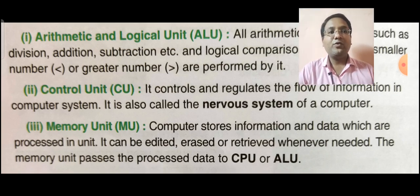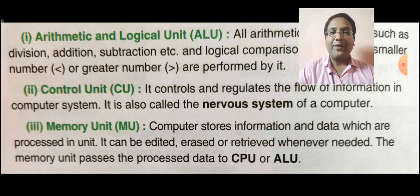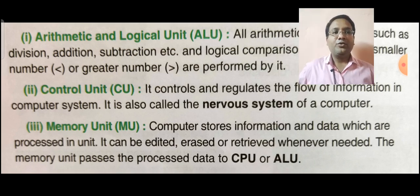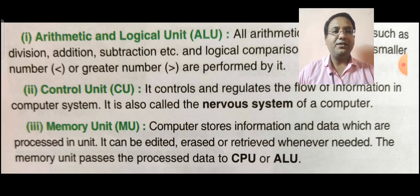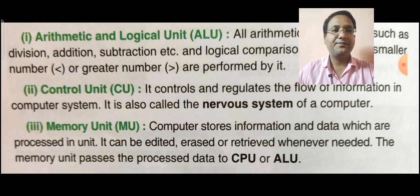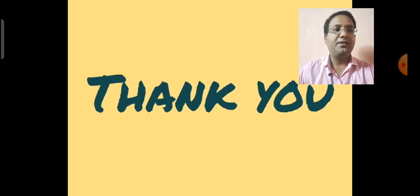There are two types of memory available in the computer. First is primary memory. Second is secondary memory. Today we have discussed some important topics of chapter first. I will explain about next topic in the next class. Thank you.